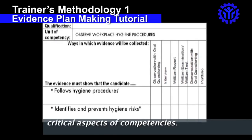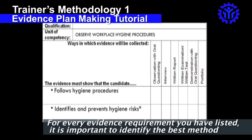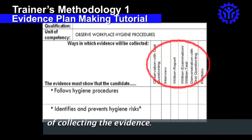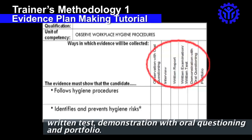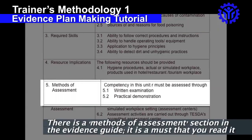For the Critical Aspects of Competency, you can refer to the Evidence Guide for the list. For every evidence requirement you have listed, it is important to identify the best method of collecting the evidence. It can be: 1. Observation with Oral Questioning, 2. Interview, 3. Written Report, 4. Written Examination or Written Test, 5. Demonstration with Oral Questioning, or 6. Portfolio. There is a Methods of Assessment section in the Evidence Guide — it is a must that you read it.